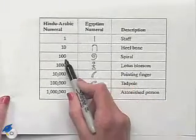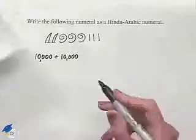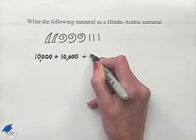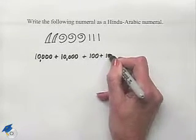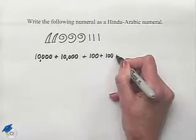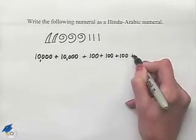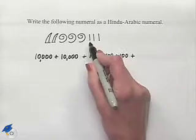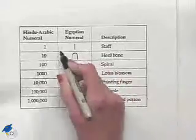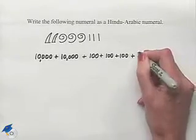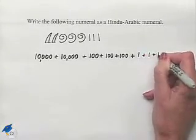The spiral is equivalent to 100, so we're going to have plus 100, plus 100, plus 100. Finally, we see the staff, which is equivalent to the number one, so we'll have one plus one plus one.